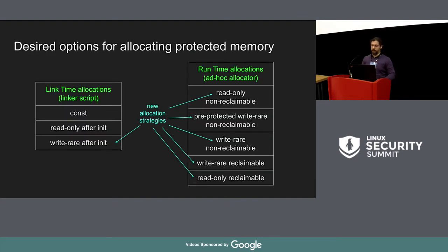What I came up with so far is several different ways of declaring how memory should be treated, depending also on the way it is allocated. On the left-hand side, you can see what is currently available in the kernel: you can declare some data as constant or declare it as read-only after init — but this is something allocated at link time. What is still not available is a possibility at link time to declare data you want protected to some degree but that can still be modifiable. On the right-hand side, there's a completely new set of declarations meant to provide support for dynamic allocation.